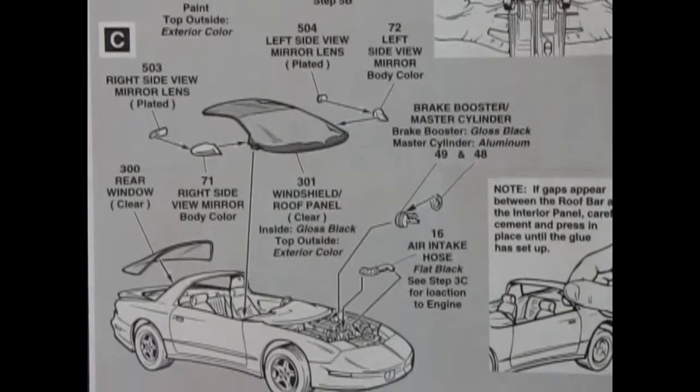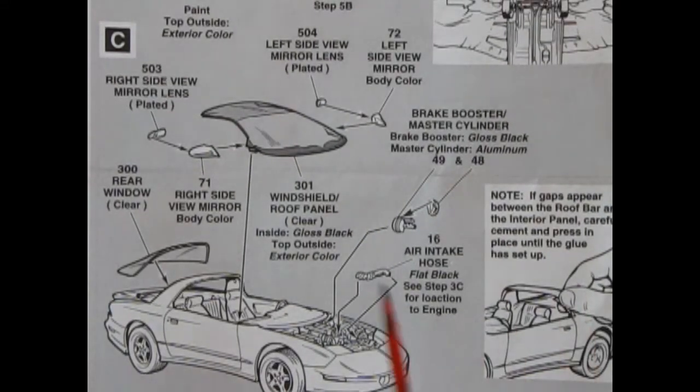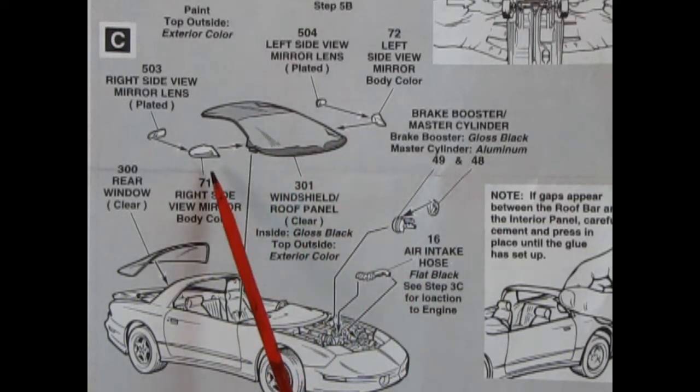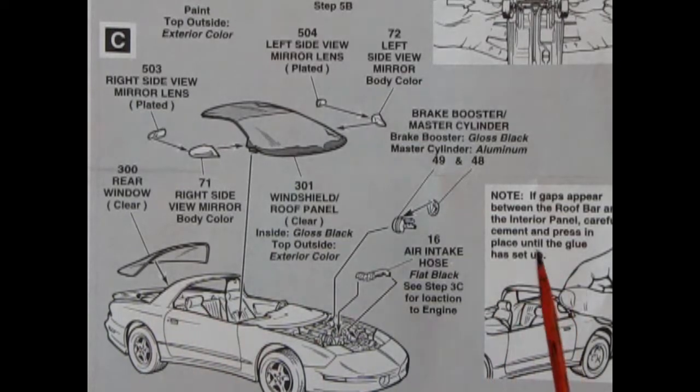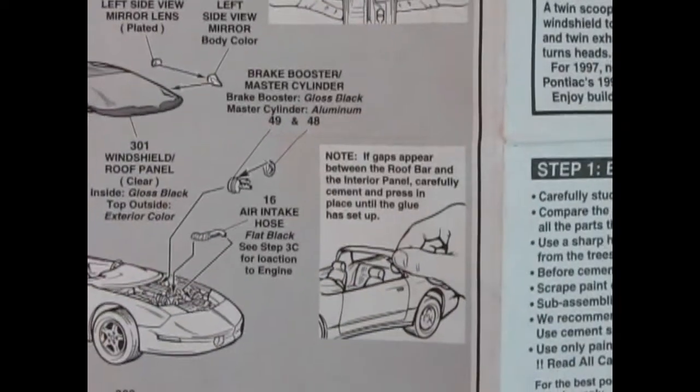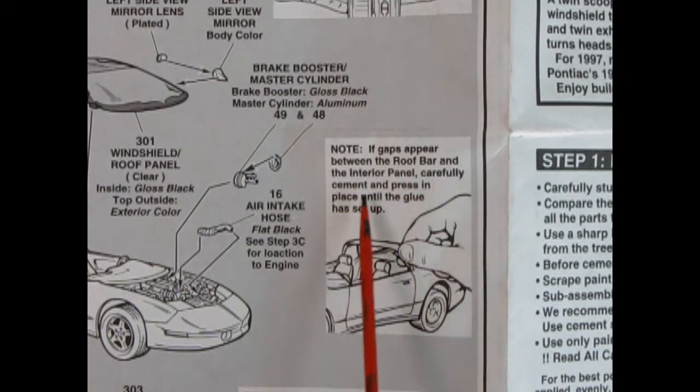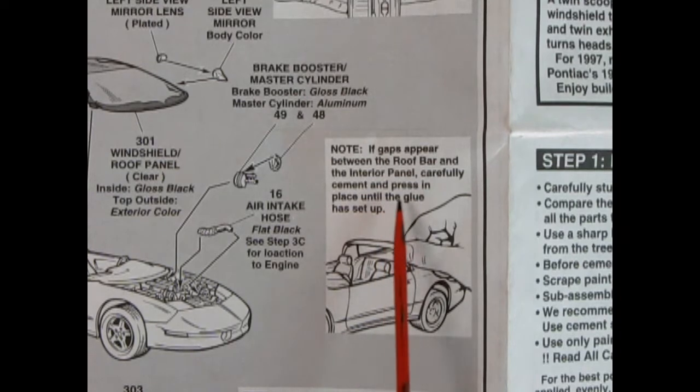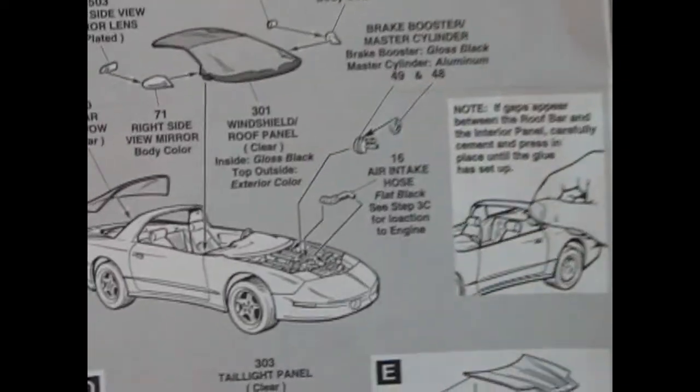In panel C we have our front windshield and the roof panel as well as our right and left hand side mirror housings and chrome plated mirrors. There's that rear window which sadly is not in this model. I don't know what Trevor's going to do about that. There's the brake booster and master cylinder and the air intake hose. Then you've got another note that says if gaps appear between the roof bar and the interior panel, carefully cement and press in place until the glue has set up. Have any of you experienced a problem with that? Let us know in the comments down below.